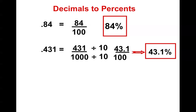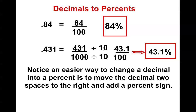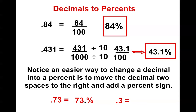Now if you started to notice a pattern, an easier way to change a decimal to a percent is to move the decimal two places to the right, and then add the percent sign. Move it one, two spaces to the right — so 73 percent. Point three: move it one, two spaces to the right, and I get 30 percent.